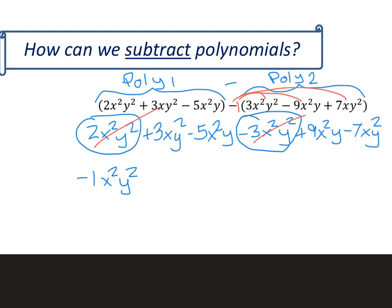All right. The next thing in line is an xy² term. And so let's see if we've got anything else to combine that with. And I do. I have a negative 7xy² term. So 3 minus 7 would be negative 4.